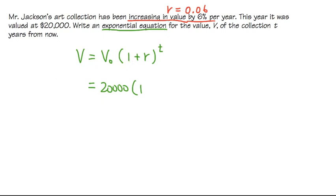But anyways, this is positive, so the r is positive 0.06. And then all this is raised to the t power, because it's T years from now, right?